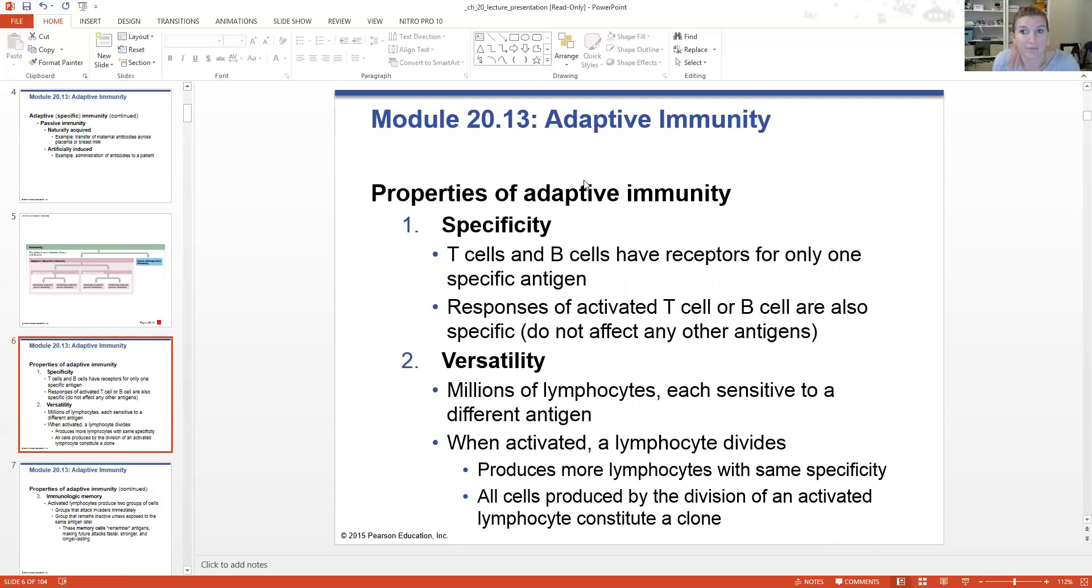Let's talk about some properties of adaptive immunity. First of all, it's specific. Those T cells and B cells have receptors for that one specific antigen. Go back to our nonspecific immunity, your complement system, interferons, natural killer cells, they're all going to respond in the same exact way no matter what the pathogen is. Here, they're very specialized and specific. The responses of the T cells and B cells that have been activated are specific also. They're only going to target the antigen that they are designed for.